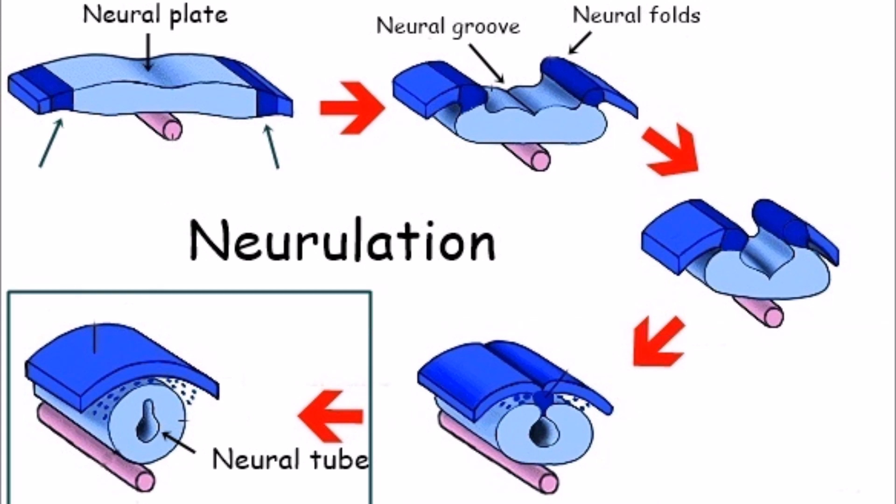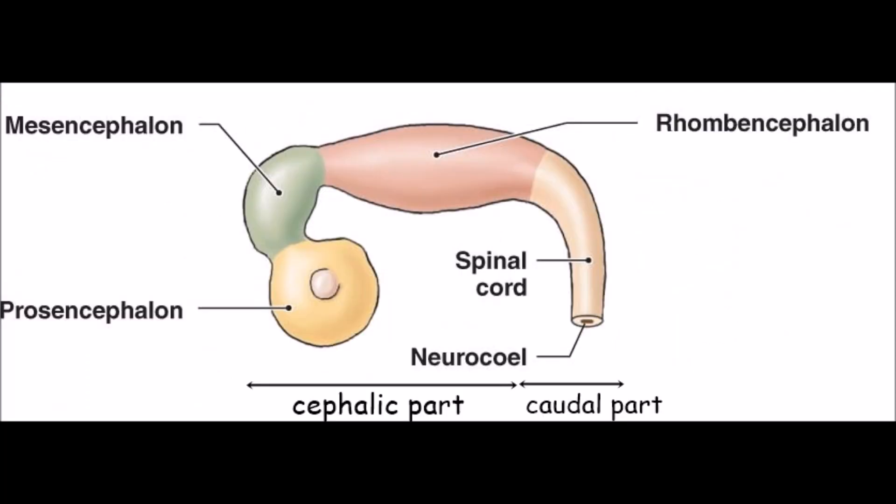This gives rise to the neural tube. After neurulation is completed, the central nervous system is formed. It appears as a tube with a broad cephalic part, which forms the brain vesicles, and a narrow caudal part, which forms the spinal cord.